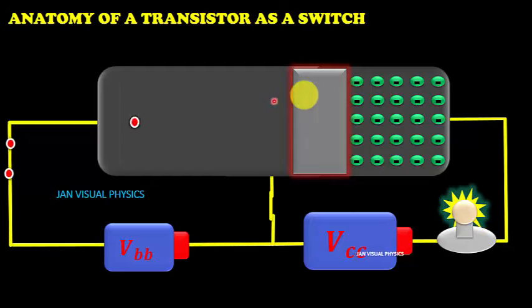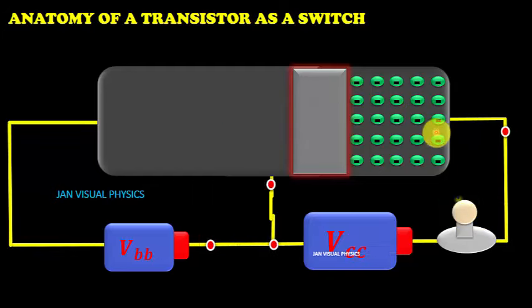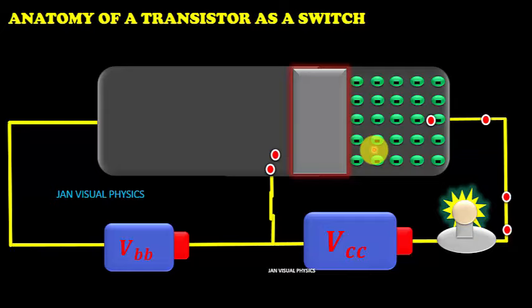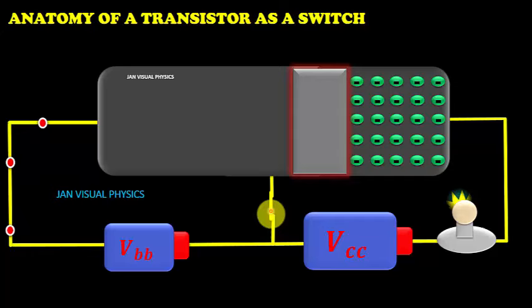95% of current passes through the collector of the transistor while 5% passes through the base of the transistor. Very small amount of current passes through the base.